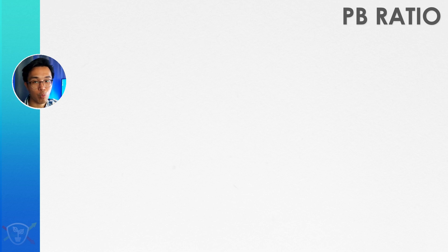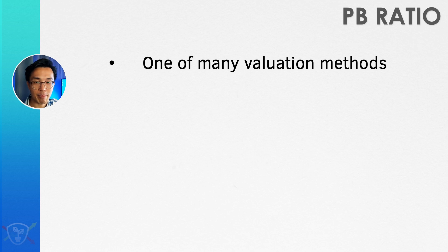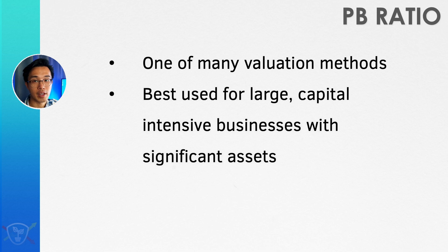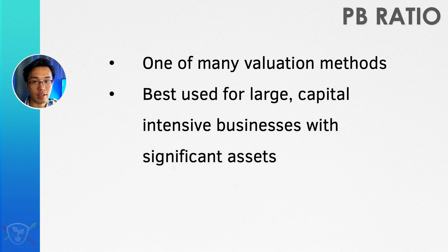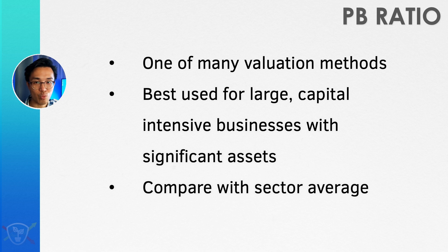Also, the PB ratio is just one of several different valuation methods. It happens to be the simplest and most straightforward to implement, but it has its limitations and may not be the best method to apply to every type of business. PB ratio is best used on companies that have a lot of tangible assets — things like financial investment companies, real estate companies, energy companies, and transportation businesses. These are capital-intensive companies that hold large amounts of assets on their balance sheet. Also, companies in the same sector may tend to display similar PB ratio characteristics, so make sure you are comparing companies within the same sector.